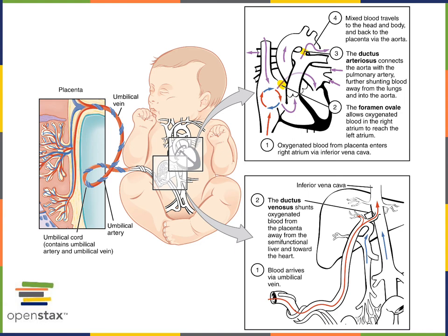The foramen ovale and ductus arteriosus enable blood to bypass the pulmonary circuit, moving directly into the systemic circuit, because the pulmonary circuit does not function for gas exchange until after birth.